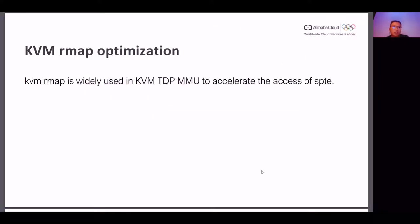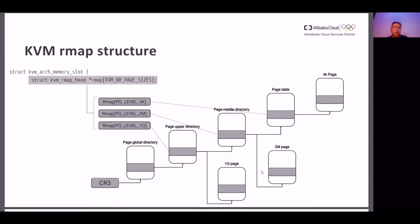The following is KVM RMAP optimization. KVM RMAP is widely used in KVM TDP MMAU page to accelerate the access of the shadow page table entry. RMAP is from the KVM memory slot structure. RMAP has three elements: PG level 4K, PG level 2M, and PG level 1G.